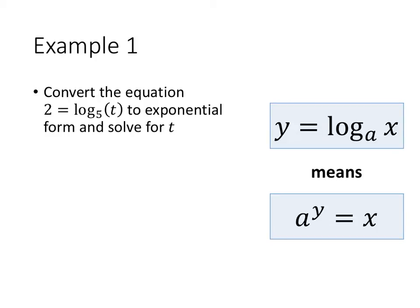So let's see this in action. We're given a logarithmic equation. We're told to convert it to exponential form and then solve for t. So again, notice the three pieces. We've got the 2, which is by itself on the left-hand side of the logarithmic equation. So the 2 corresponds to the y.